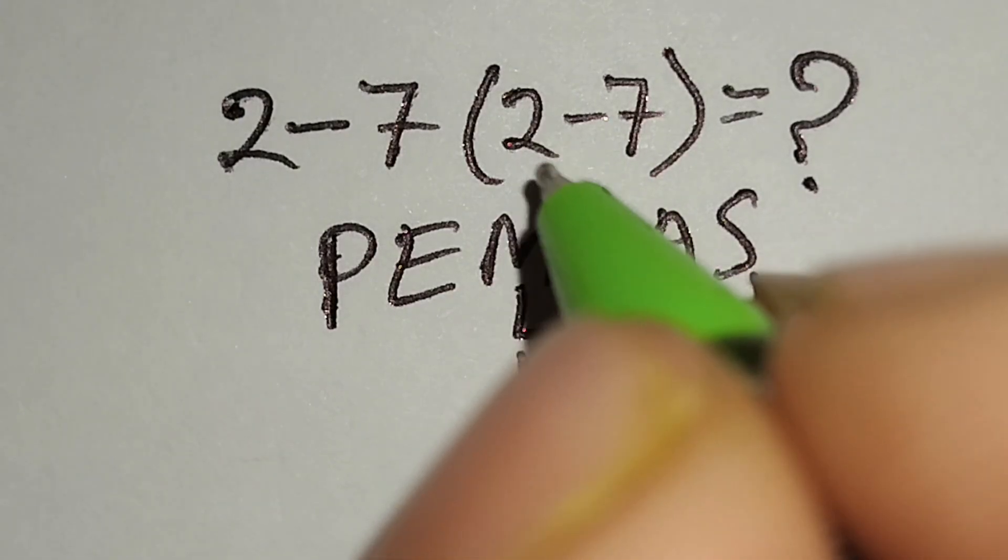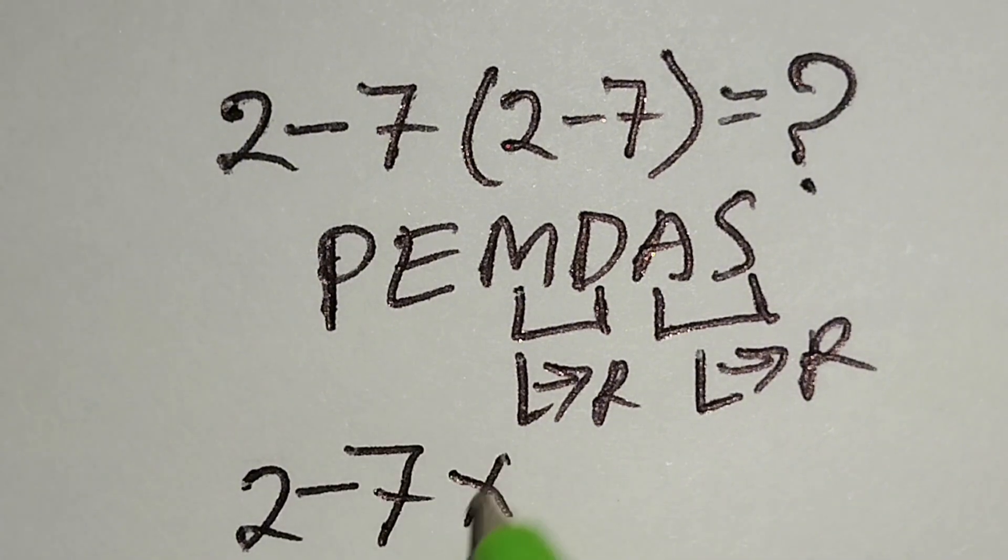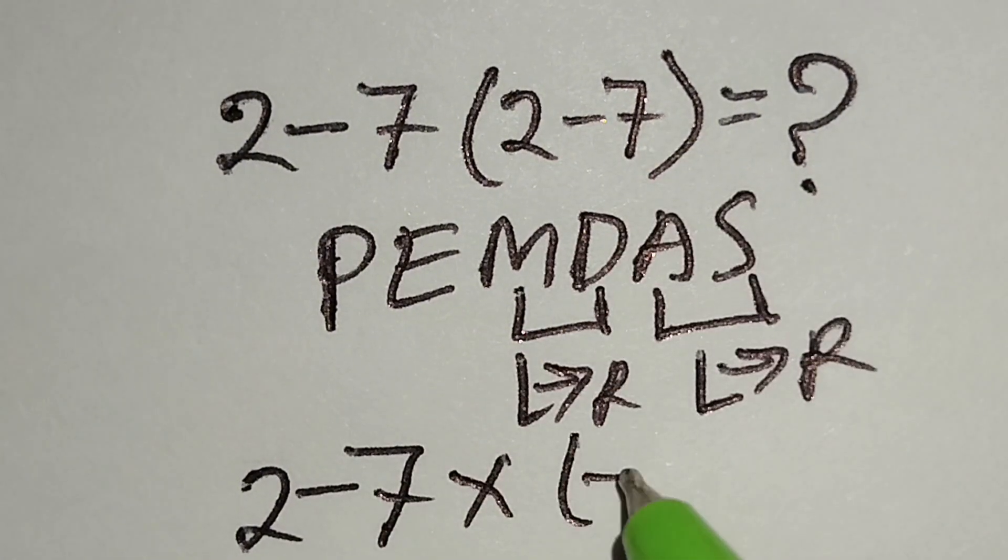Therefore at first we have to work with this parenthesis. Here 2 minus 7, multiply this, 2 minus 7 gives us negative 5.